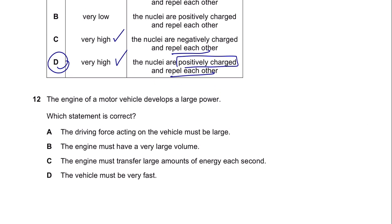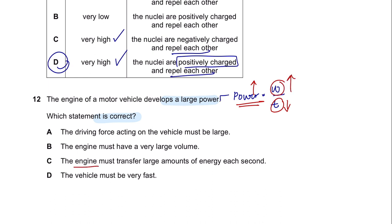Question 12. The engine of a motor vehicle develops a large power. Which statement is correct? Power is defined as work done over time. To gain high power, you need to reduce the time or have high work done. So the engine must transfer a large amount of energy for each second. The answer is C.